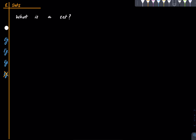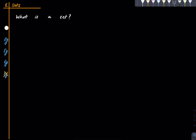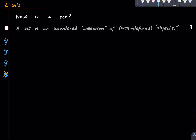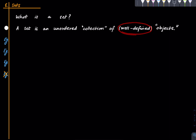So with that preamble let us start. What is a set? I don't know. I don't think I can properly define a set — the proper definition will be discussed in a book on formal set theory, and I discourage you from getting into it. Right now it is enough to just have an informal definition, which is that a set is an unordered collection of well-defined objects.